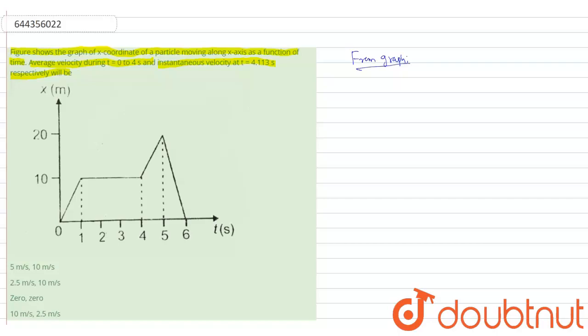First we have to find the displacement during t equal to 0 to 4 seconds. Now displacement during t equal to 0 seconds to 4 seconds is, if you observe carefully here, 0 to 4 seconds displacement. Up to 0 to 1 it has covered 10 meters. After 1 to 4 seconds, still it is at same place. So that means total displacement covered in 0 to 4 seconds is 10 meters only.